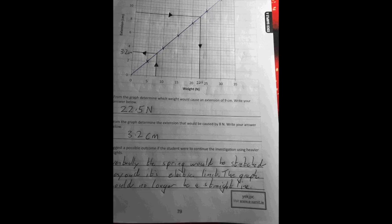With heavier weights the spring will keep getting more and more extended but eventually you'd reach a point where you've gone past its limit of elasticity. If you kept adding weights it would just get stretched out of line so you wouldn't get that straight line anymore.